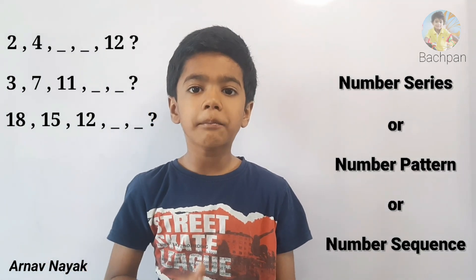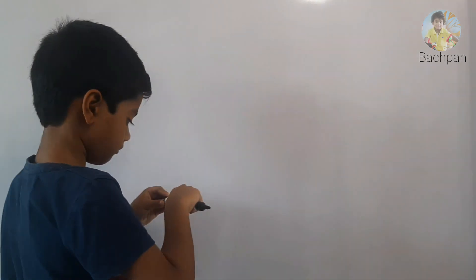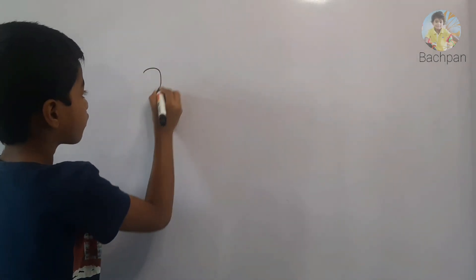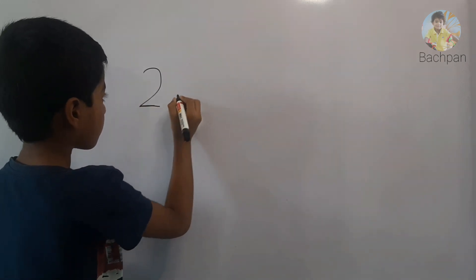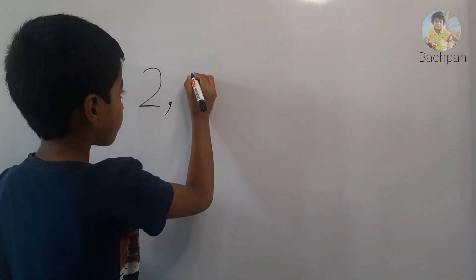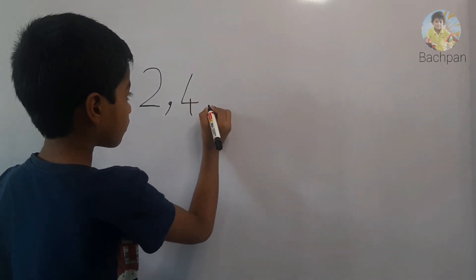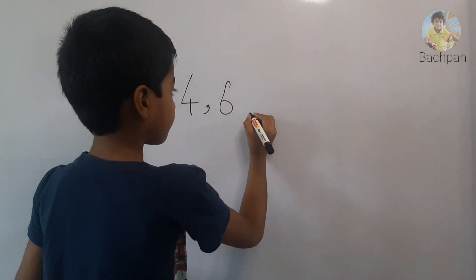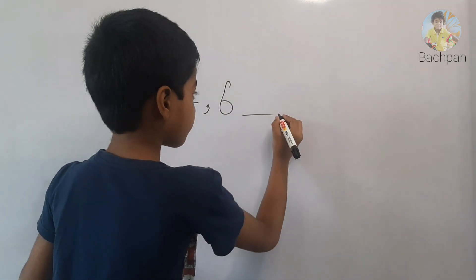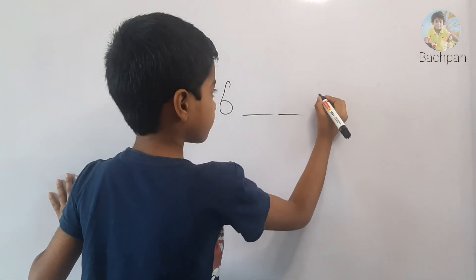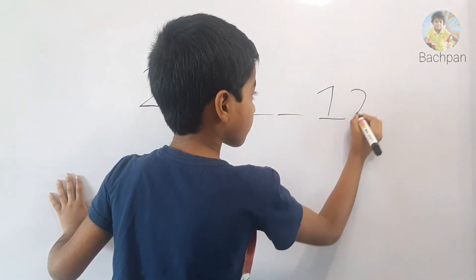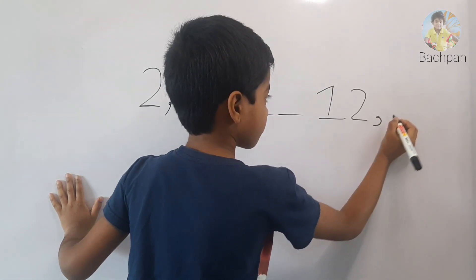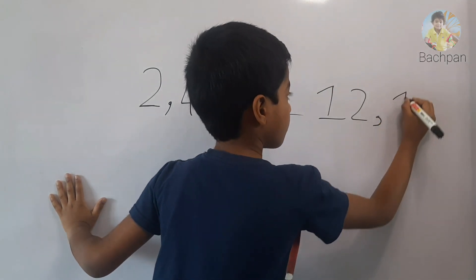Let's take an example so that we can understand easily. The series is: 2, 4, 6, dash, dash, 12, 14.